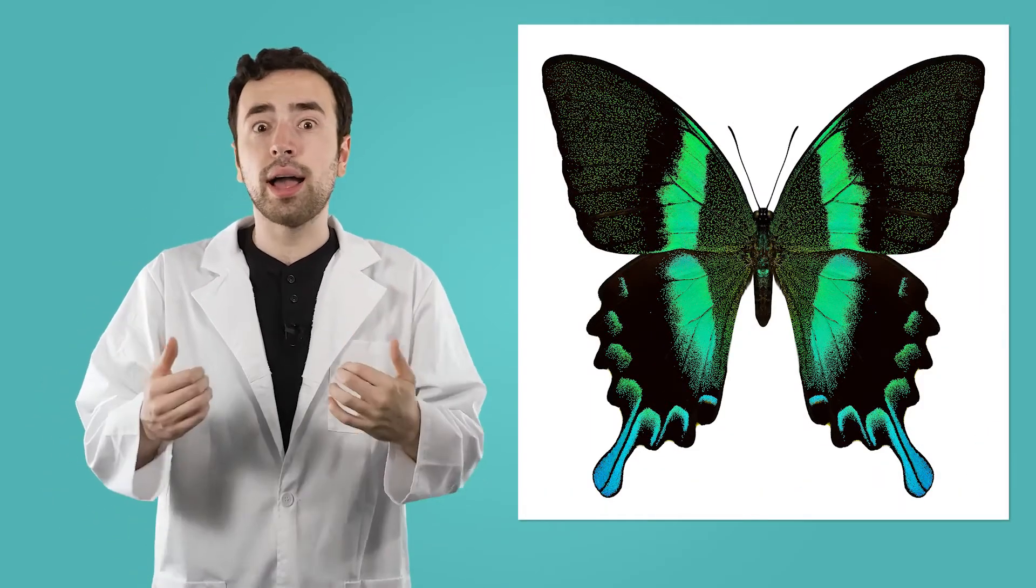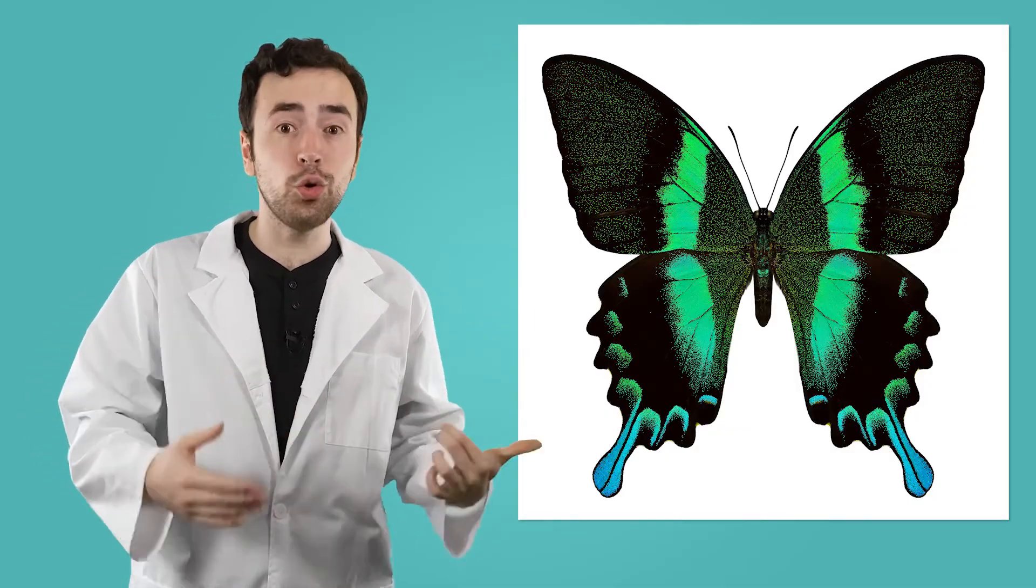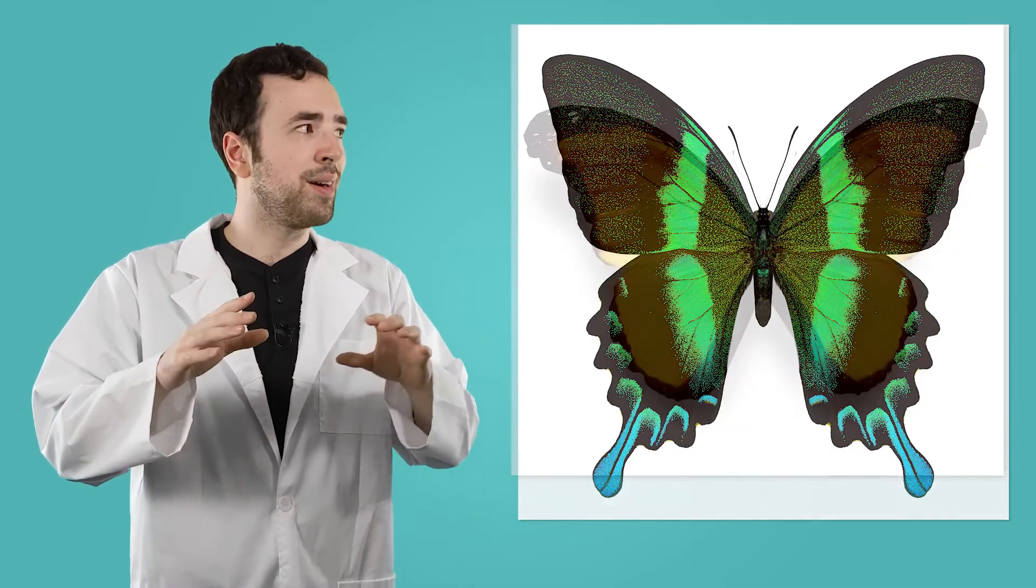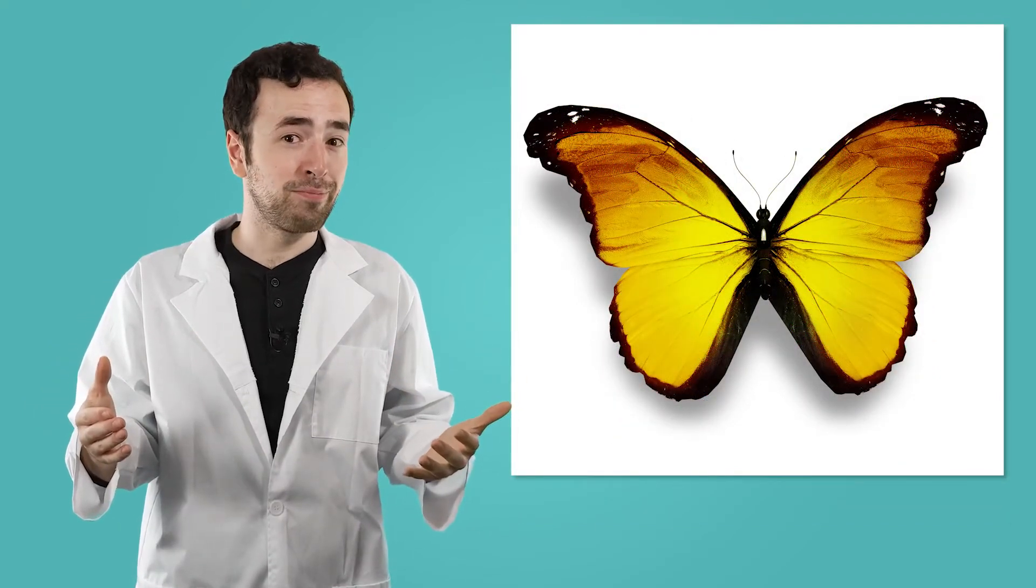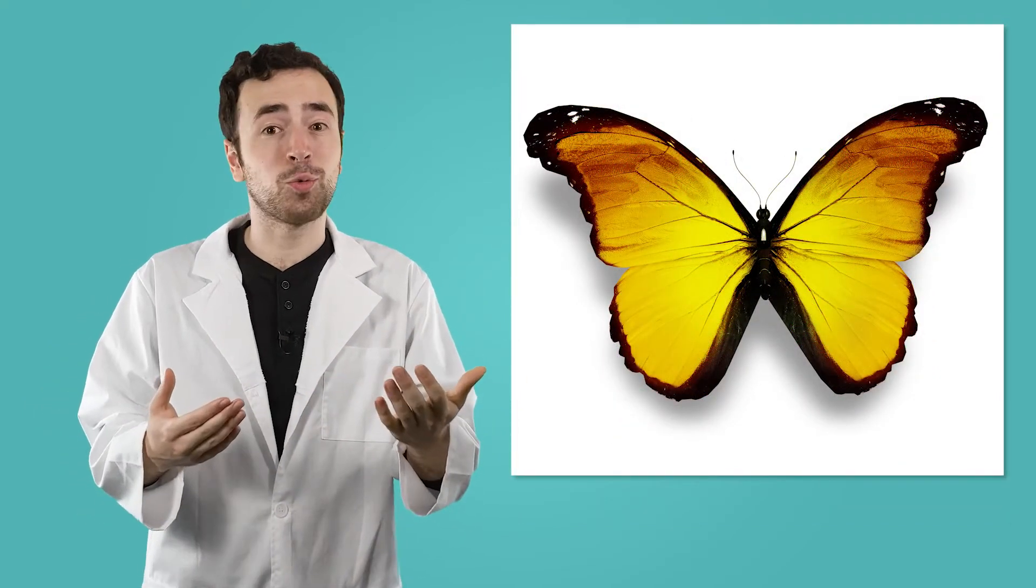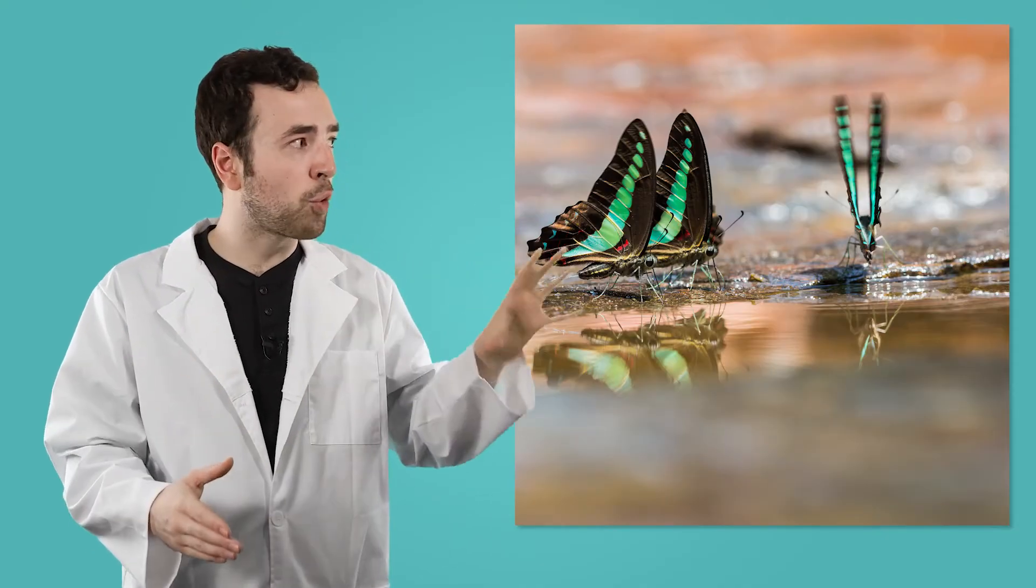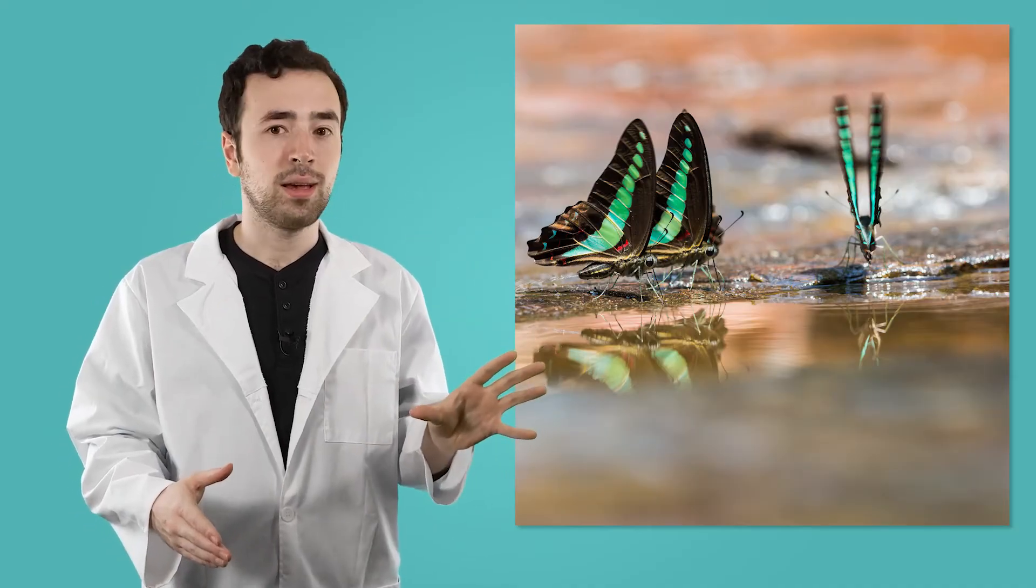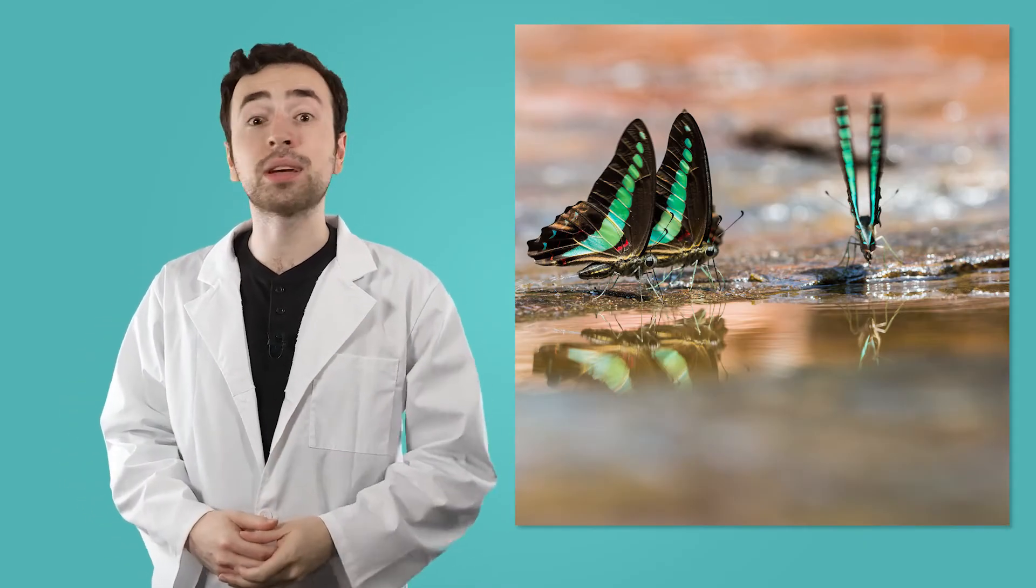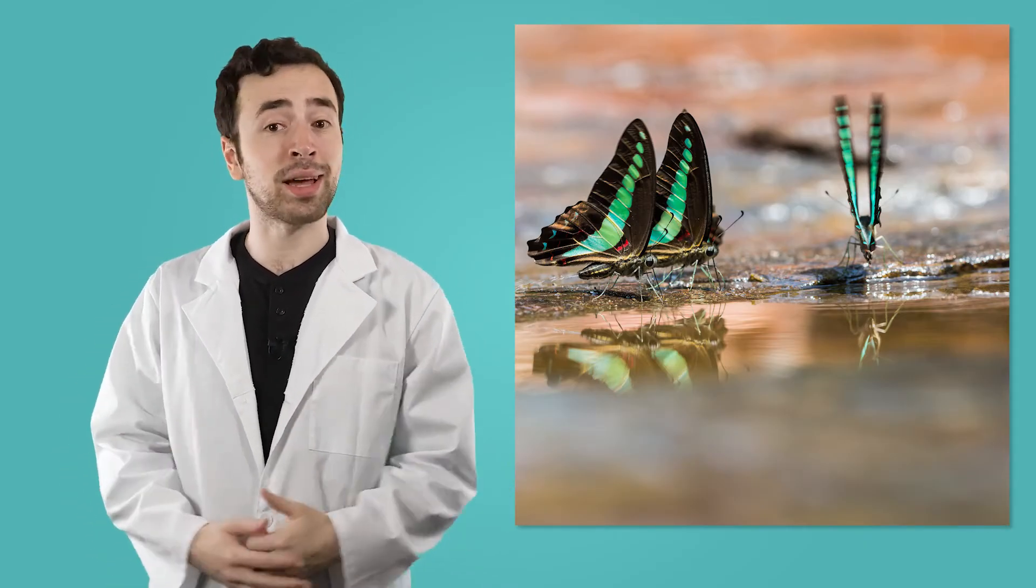For example, I could think that the colors on these butterflies' wings look really cool, but you could think, eh, they'd look better if they were yellow. Observations like that don't really help us answer most scientific questions. But we can both agree that these butterflies all have two black and green wings. That's because it's an objective observation that only focuses on the facts. Because objective observations don't change with people's opinions, they're a very useful tool for helping us gather evidence and answer scientific questions.